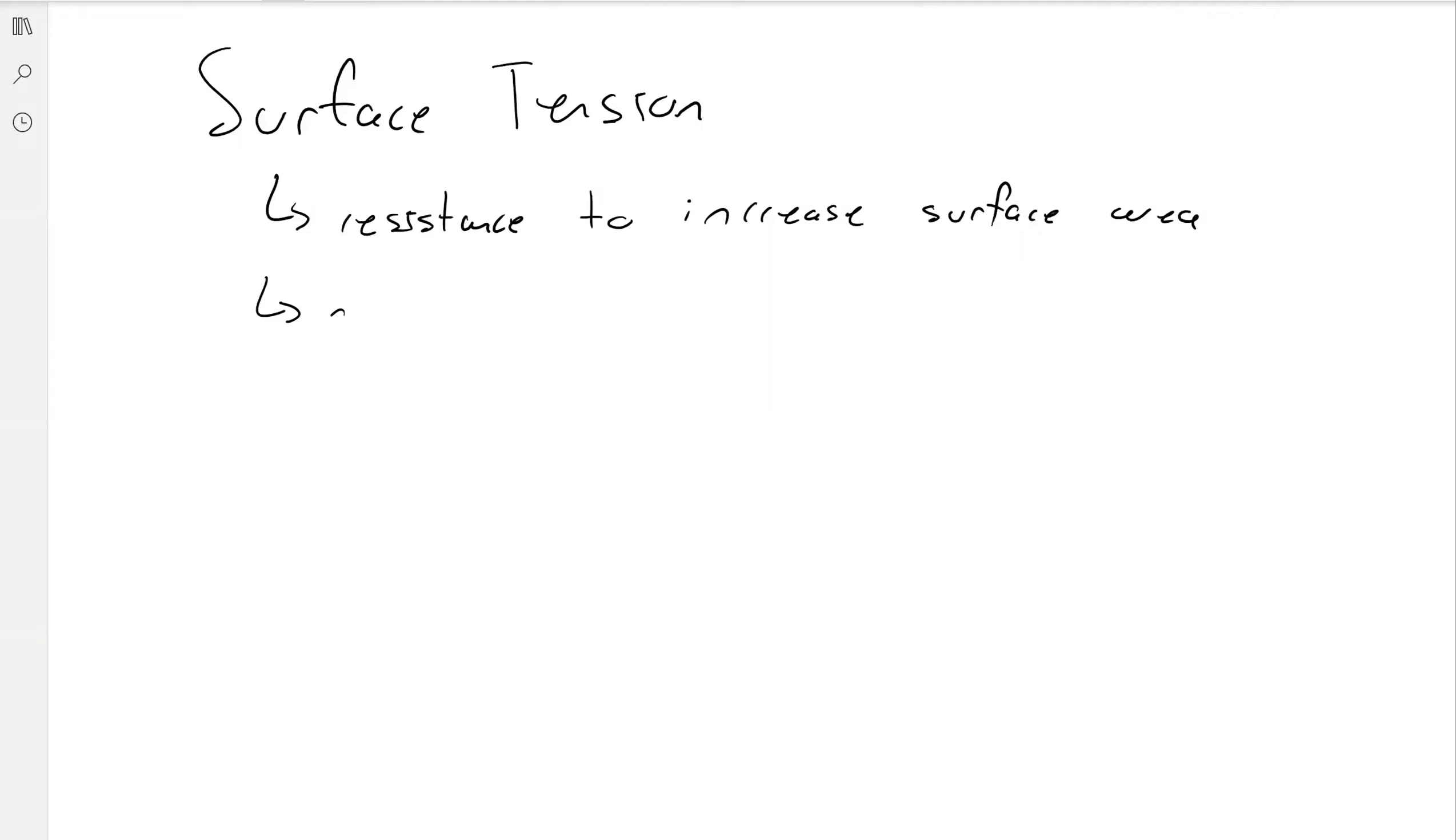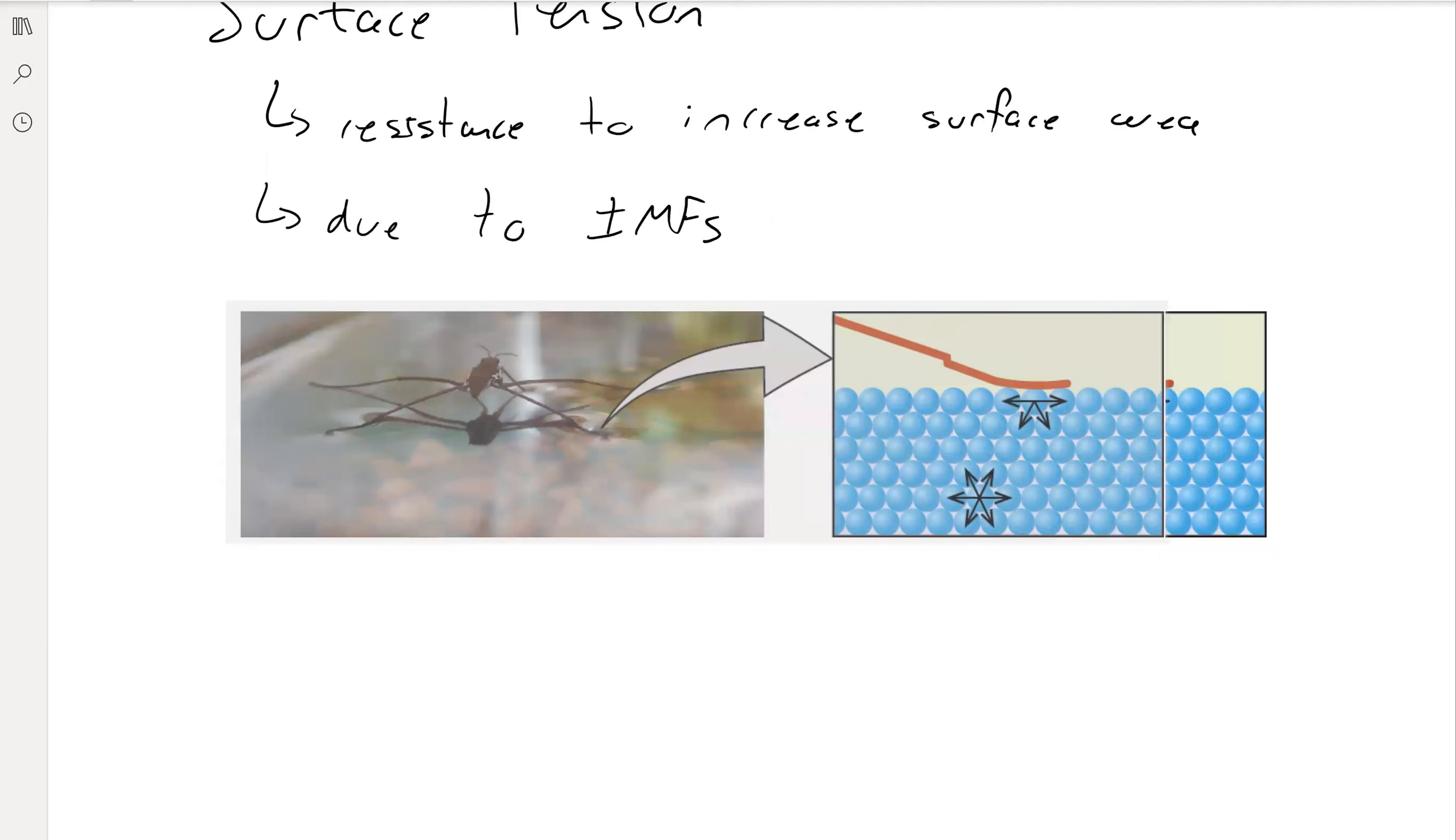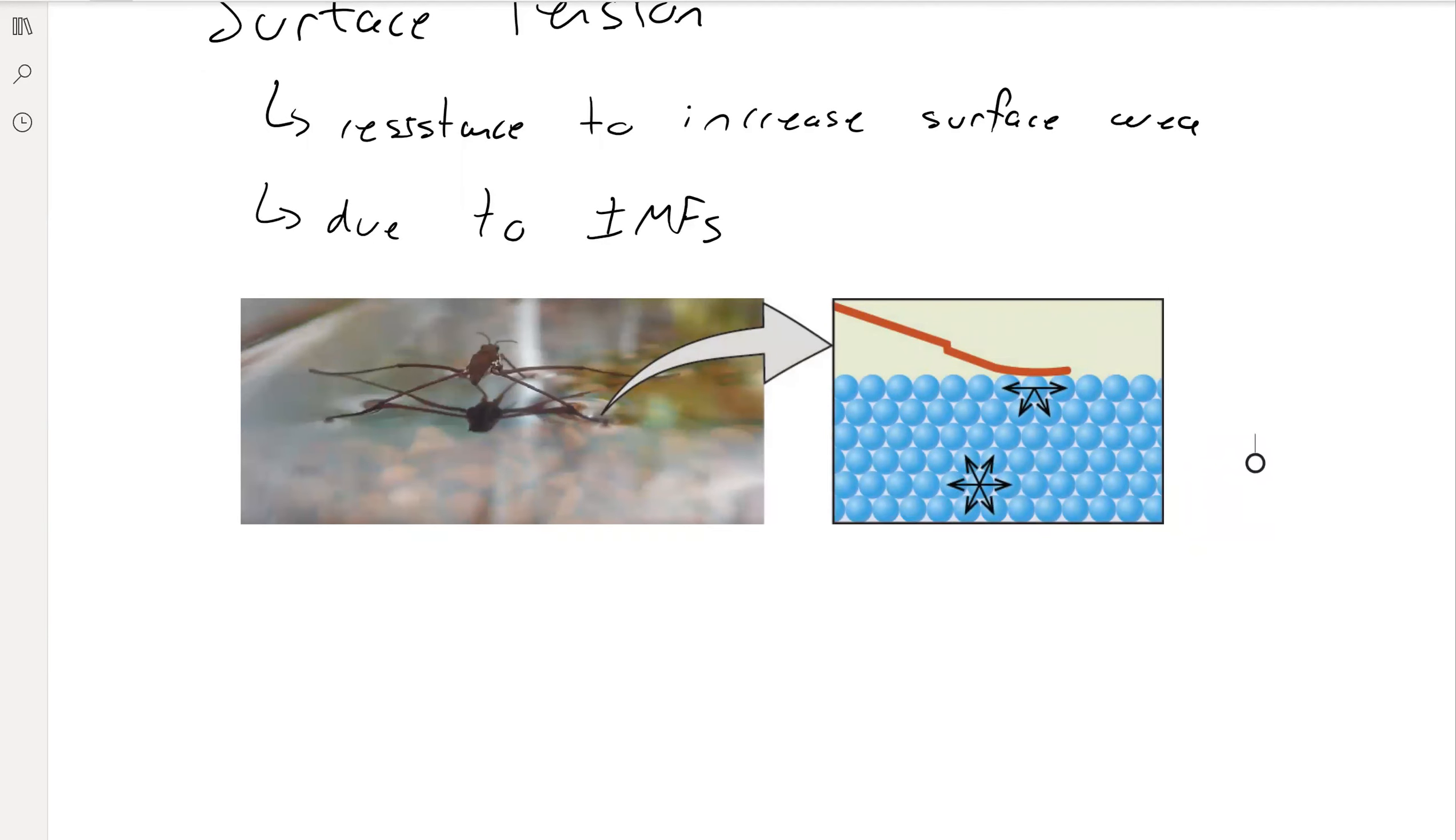And so the surface tension is due to intermolecular forces. The more intermolecular forces or the stronger the intermolecular forces, the more surface tension that you'll have. So for example, that's why this little bug can walk on this water and it doesn't just fall through. It's because these water molecules like to stick to one another, and so they stick to one another and they allow the little bug's leg to stay on there.